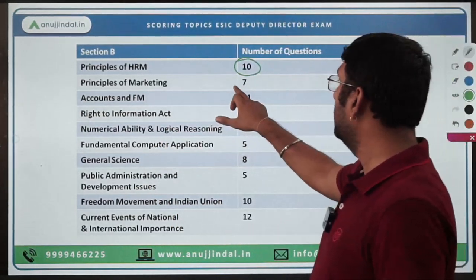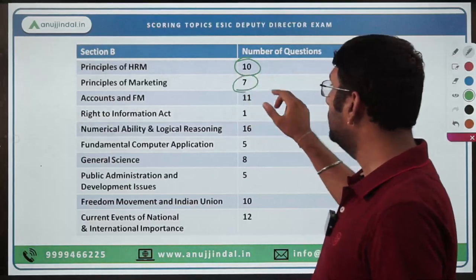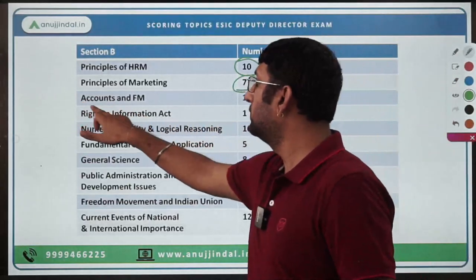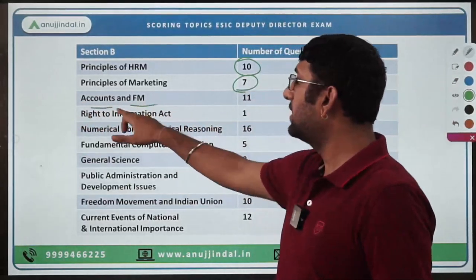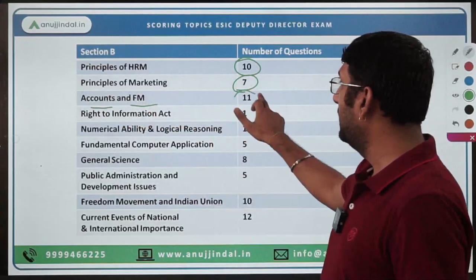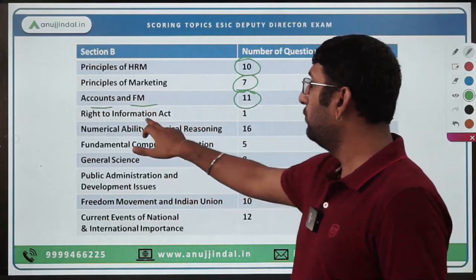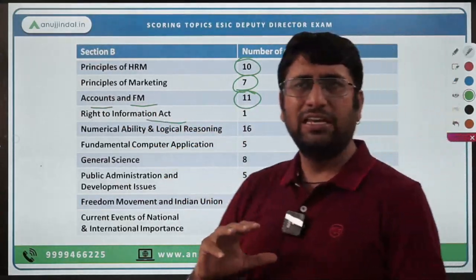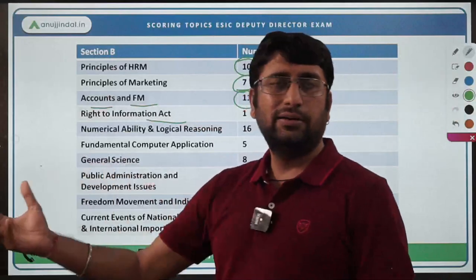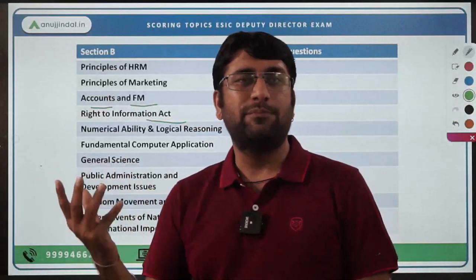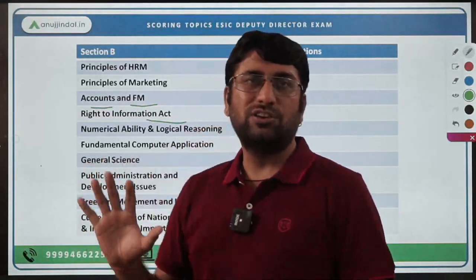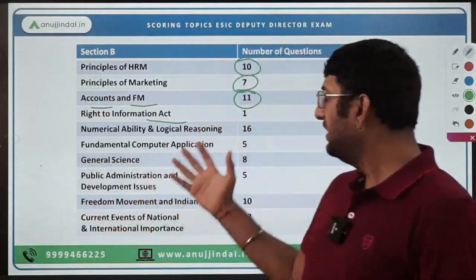Principles of Marketing has approximately 7 questions. Accounts and Financial Management — two subjects clubbed together, Accountancy and Financial Management — has 11 questions. Right to Information Act is a very small act and the PDF provided in the course is more than sufficient to cover it.